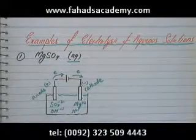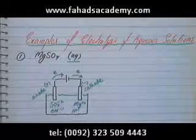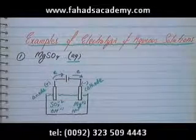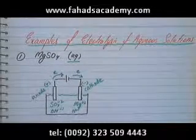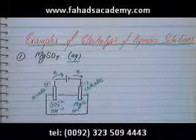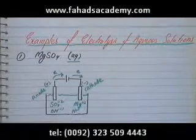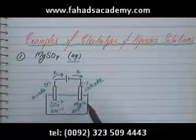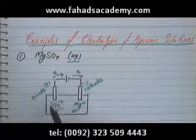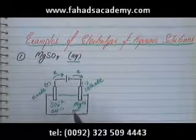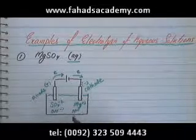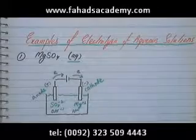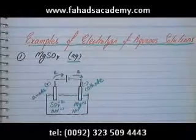We've seen how MgSO₄ ionizes and splits into its ions. Mg²⁺ goes to the cathode, SO₄²⁻ goes to the anode, and H⁺ and OH⁻ come from water — H⁺ goes to the cathode and OH⁻ goes to the anode.